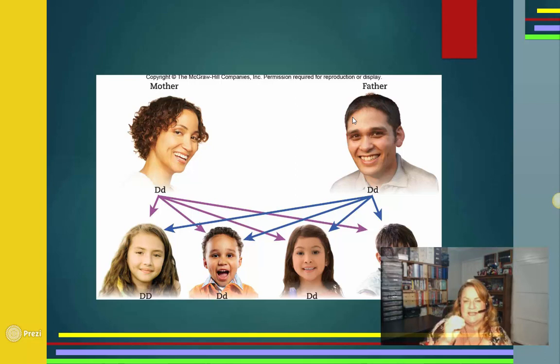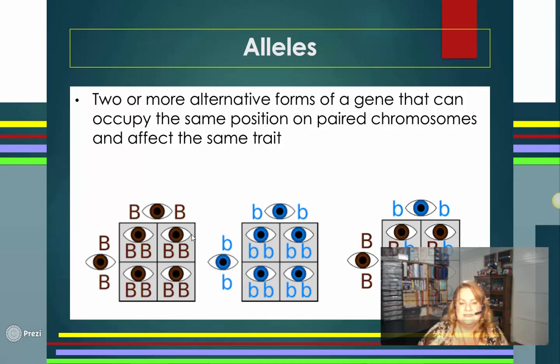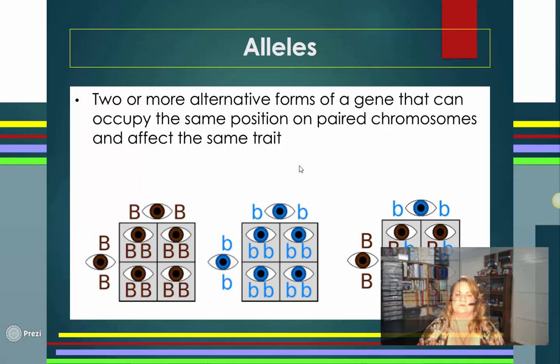Here: dominant is brown eye, recessive is blue. If you have two blue-eyed parents, look at what you get. If you have a blue parent and a brown parent, you get this. If you have both brown-eyed parents, you get this — but if one carries a blue recessive, you may get one blue. Make sure you know what alleles means: two or more alternative forms of a gene that can occupy the same position on a paired chromosome. Having that mix of dominant and recessive is how traits show up.